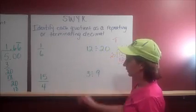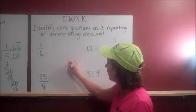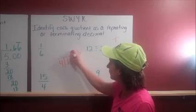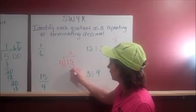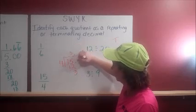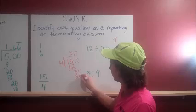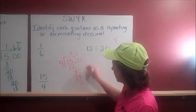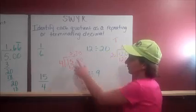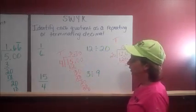Let's look at 15 divided by 4. 15 divided by 4. This is a terminating decimal.